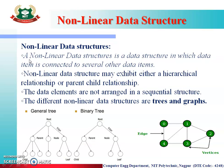A non-linear data structure is a data structure in which a data item is connected to several other items. Data is not stored in contiguous memory allocation in non-linear data structures. Non-linear data structures may exhibit either a hierarchical relationship or a parent-child relationship. The data elements are not arranged in a sequential structure. Examples of non-linear data structures are trees and graphs. In a tree structure, there is a root node and its sub-nodes and child nodes — with a root, branches, and leaves.